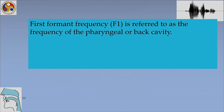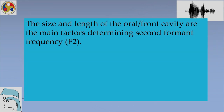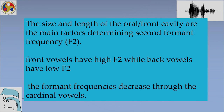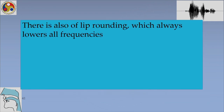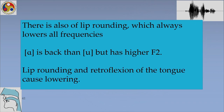Summarizing: F1 is referred to as the frequency of the pharyngeal or back cavity and is inversely related to tongue height — low vowels have high F1 and high vowels have low F1. F2 is determined mainly by the size and length of the oral front cavity — front vowels have high F2 while back vowels have low F2. Additionally, lip rounding lowers all formant frequencies, and retroflexion of the tongue also causes lowering.